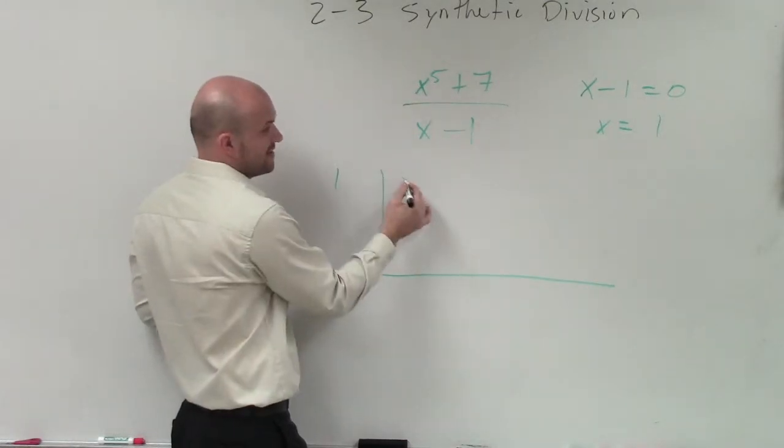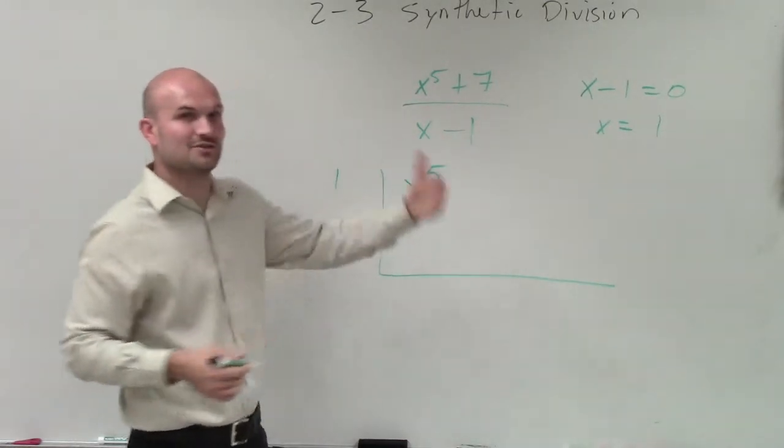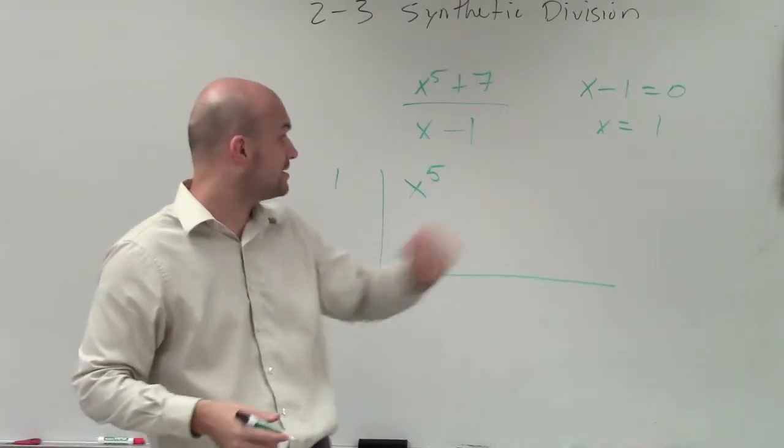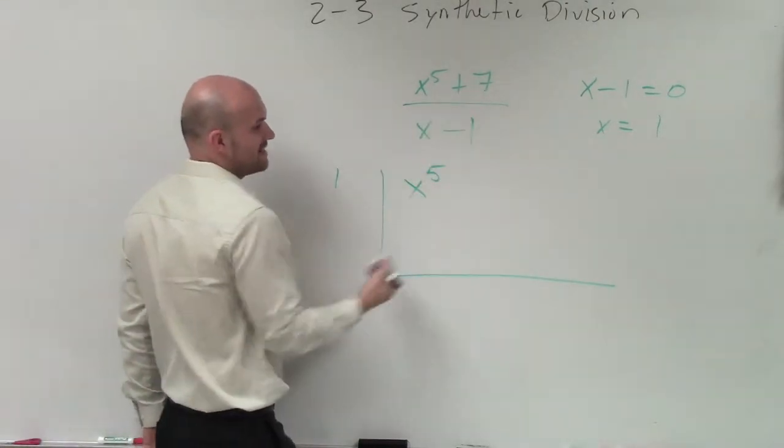So you can see we have x to the fifth, but we do not have an x to the fourth, x to the third, x squared, or a linear x, and we do have our constant seven.